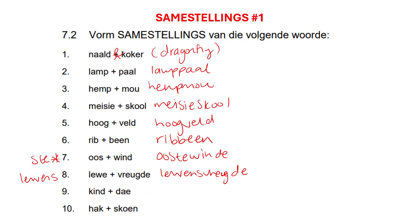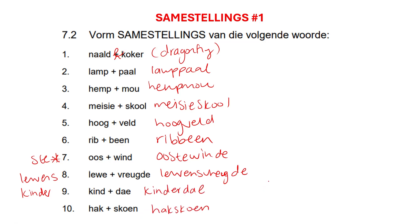'Kind' plus 'dag' — anything with 'kind' will become 'kinder', just remember that. So it will be 'kinderdag'. And 'hak' plus 'skoen' — we just put 'hak' plus 'skoen' together. It's as easy as that, guys. I will see you in the next one.